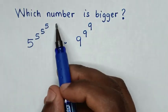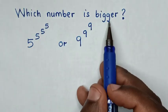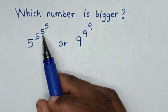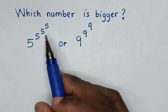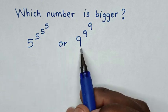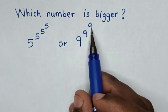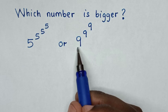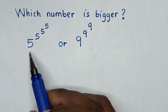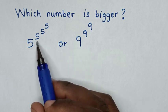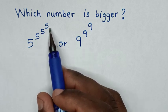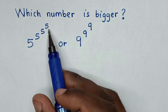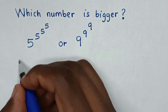Hello. Which number is bigger: 5 power 5 power 5 power 5, or 9 power 9 power 9? We'll apply log on both sides, because 5 power 5 power 5 has more towers of powers.